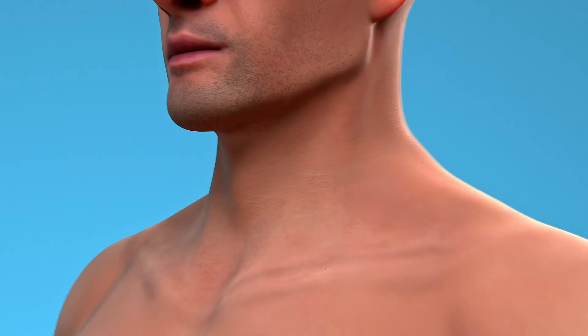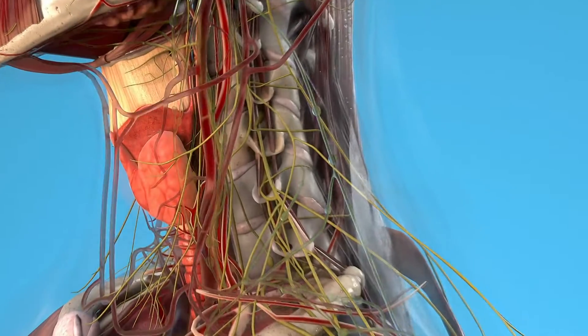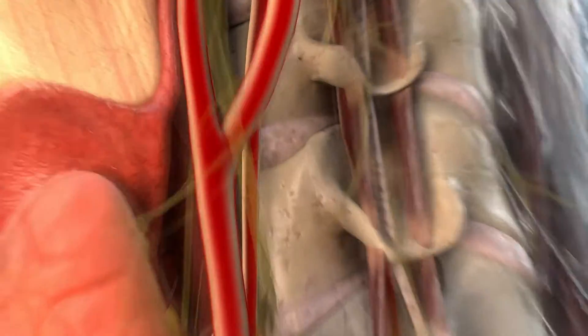Atherosclerosis is a condition characterized by the buildup of plaques, which are made up of fat, cholesterol, and other substances in the walls of arteries.